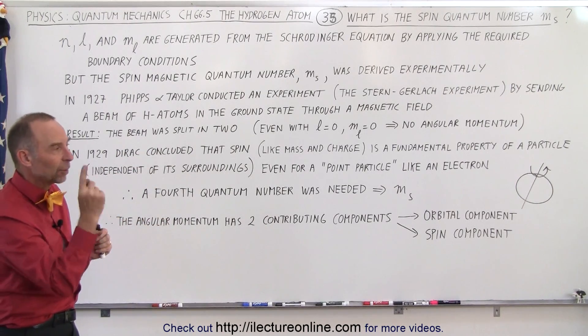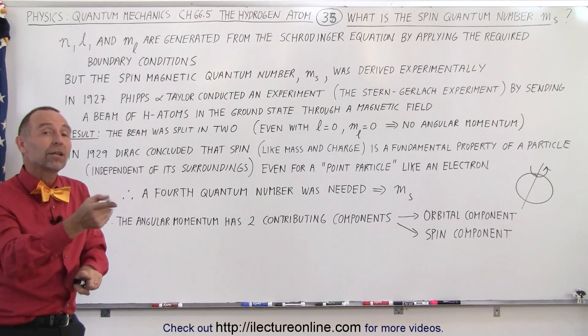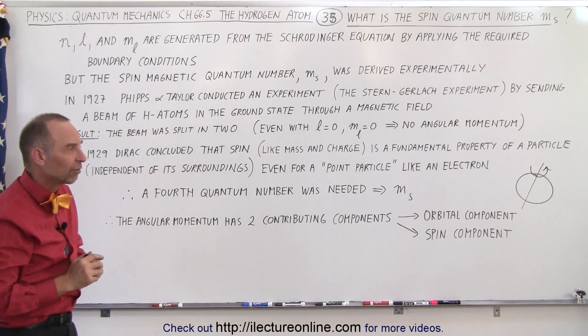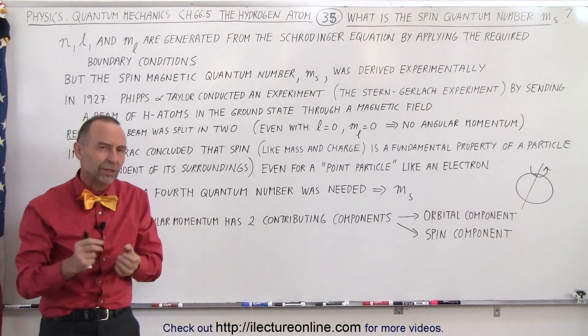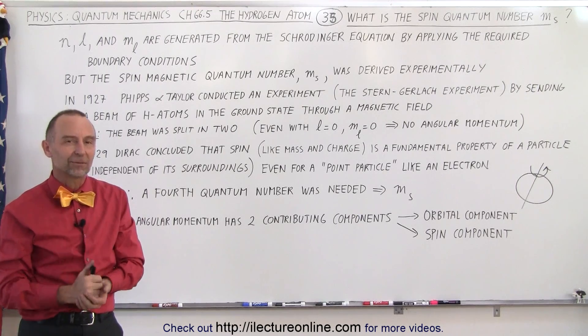so therefore there must be something about that property. In other words, you can have it spinning in one direction or spinning in the opposite direction, and that would then split it up as they're sent through the magnetic field. So at least now we know there's got to be a fourth quantum number, and it's M sub S.